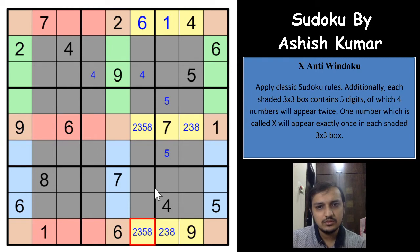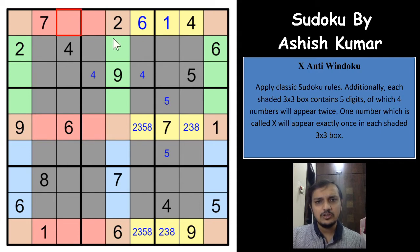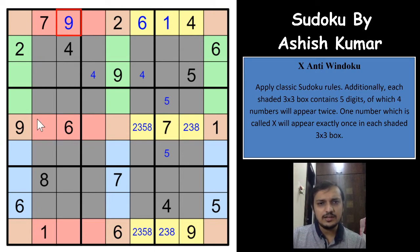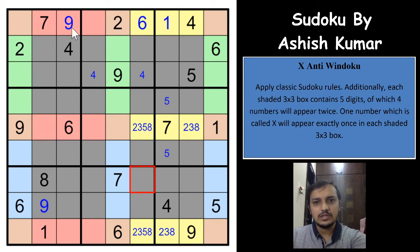Where can 9 come in the red region? A 9 cannot be in these 2 cells, nor in these 2 cells, so 9 has to be in one of these 2 cells. But there's already a 9 here, which means 9 has to go here. By classic rules, a 9 here and a 9 here means a 9 has to be in one of these 2 cells — we can mark that.